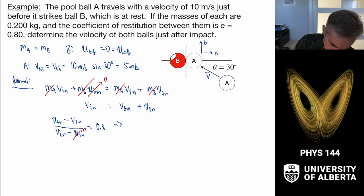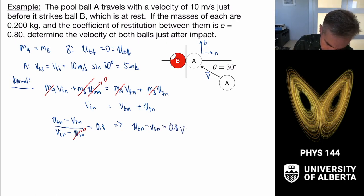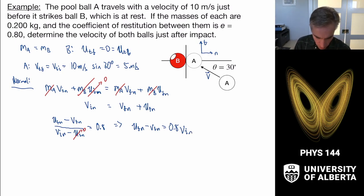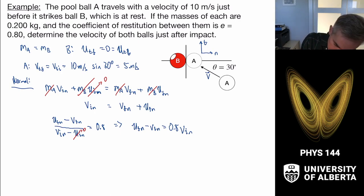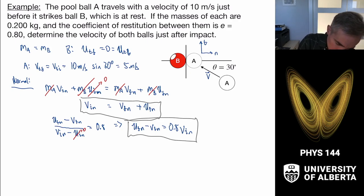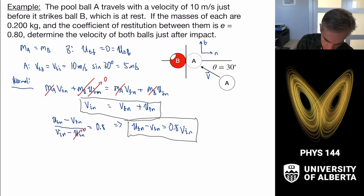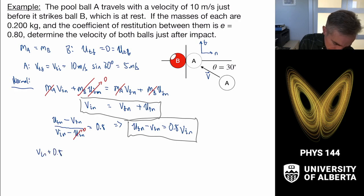Since the initial velocity of ball B in the normal direction is zero, we rewrite the coefficient of restitution expression as: u_final_normal minus v_final_normal equals 0.8 times v_initial_normal. Now we add this equation to the momentum conservation equation, combining the initial sides and the final sides.